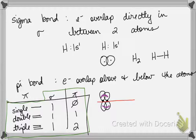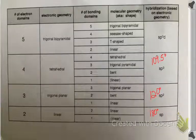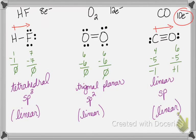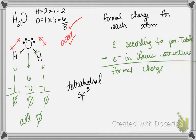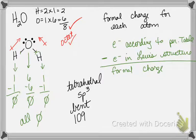Let's go through the worksheet and do the bond angles, sigma and pi bonds. For water: oxygen is the central atom, tetrahedral geometry, sp3 hybridized, and it's a bent molecule. To do bond angle, you're looking at electronic geometry. The bond angle is going to be 109.5 degrees. Water has two single bonds, so that's two sigma and zero pi.